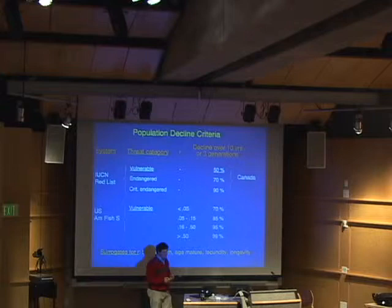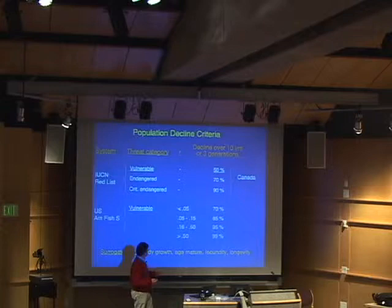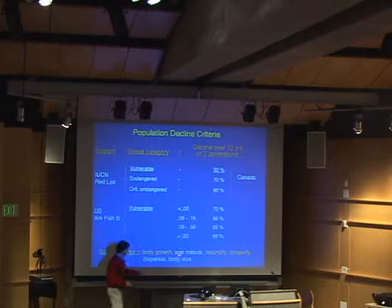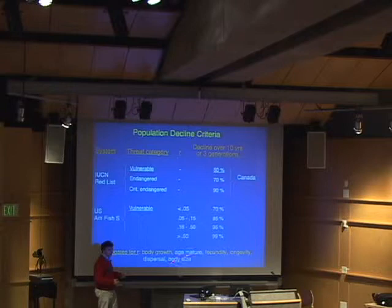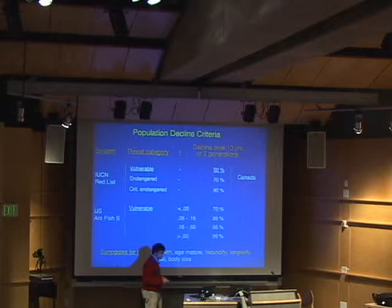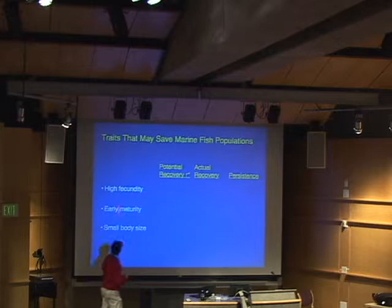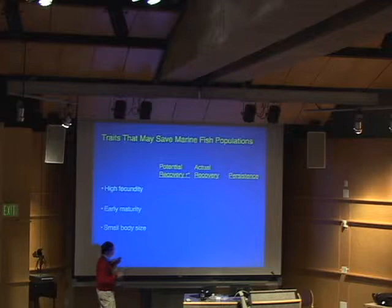Canada actually sticks to the international criteria — they do use the standard criteria. But they also allow for you to use what they call 'sober second thought': you could look at what age to mature or body size and moderate your judgment a little bit. So what I want to do is put some of these to the test. Let's take three traits. Let's look at something like high fecundity and ask, is it really related to recovery?